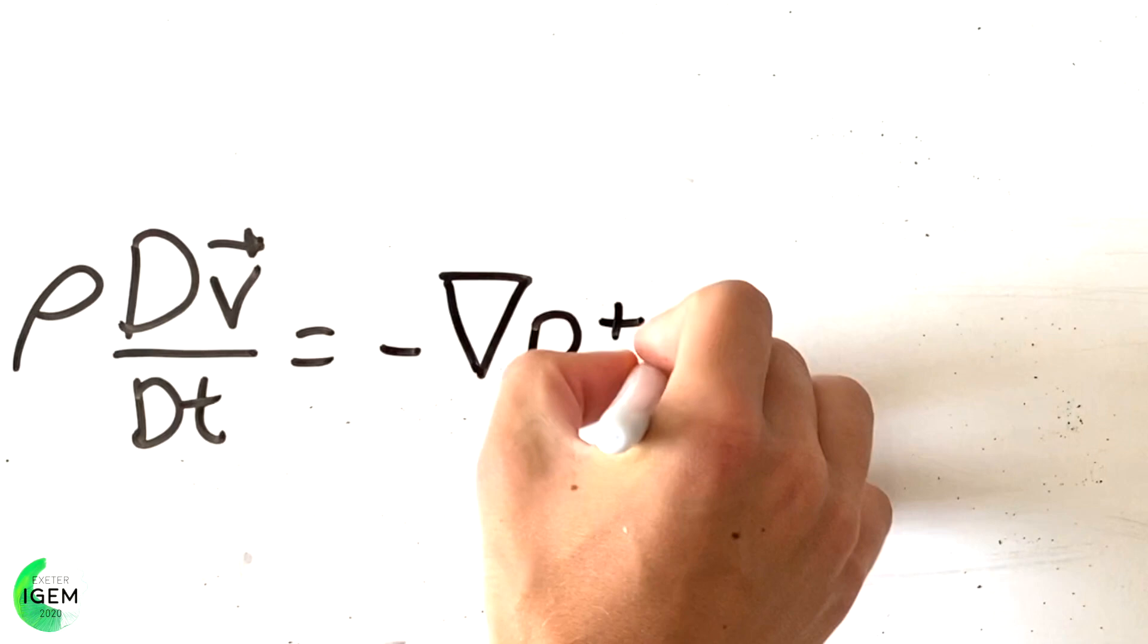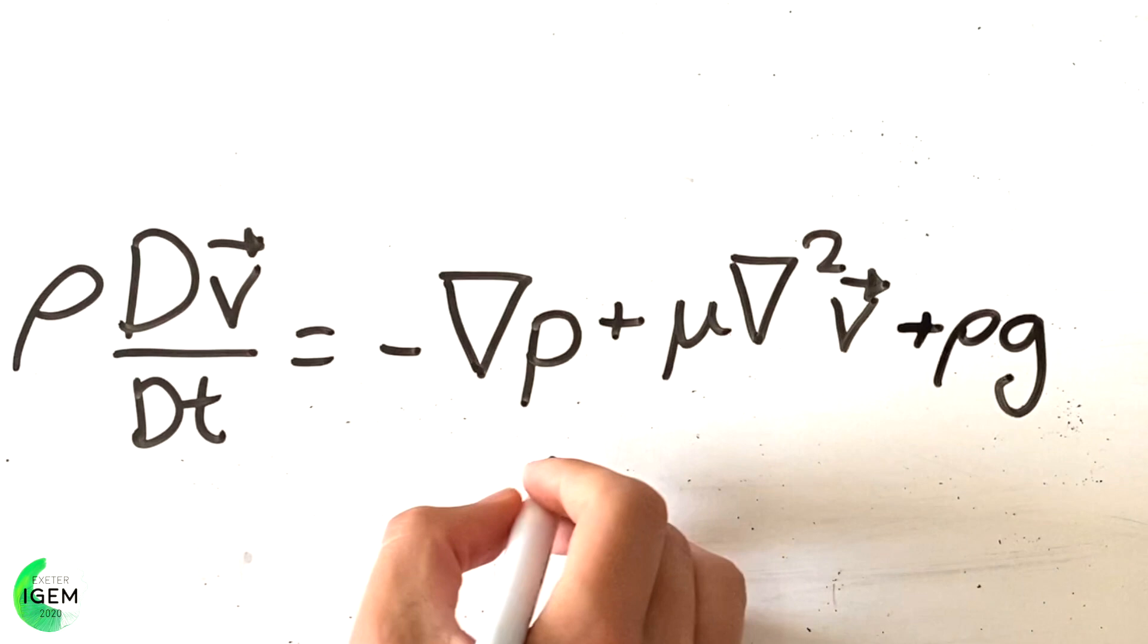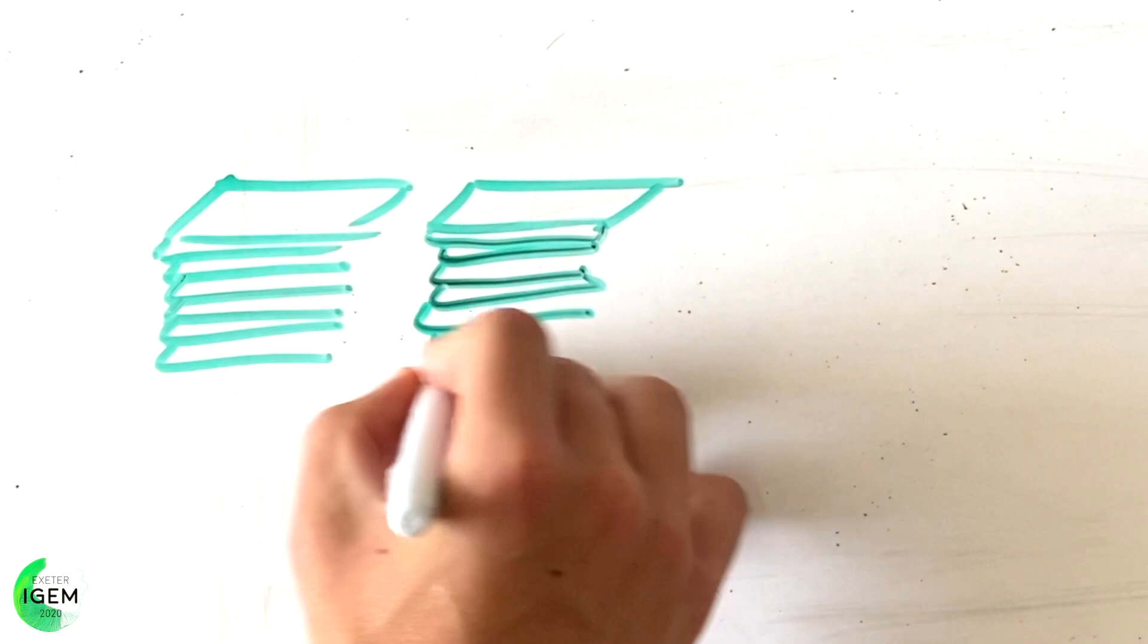The equation itself is really complicated, but it's basically an F equals MA type of equation, with the forces on the right hand side and the mass times acceleration on the left hand side. The equation is so complicated that to this day nobody has yet solved it, and there is actually a Nobel prize that will be awarded to the first person that does.